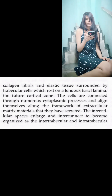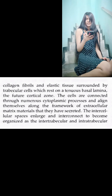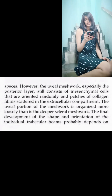The cells, which rest on a tenuous basal lamina — the future cortical zone — are connected through neural cytoplasmic processes and align themselves along the framework of the extracellular matrix material that they have secreted. The intercellular spaces enlarge and interconnect to become organized as the inter-trabecular and intra-trabecular spaces. However, the uveal meshwork, especially the posterior layer, still consists of mesenchymal cells that are oriented randomly, with patches of collagen fibrils scattered in the extracellular compartment.